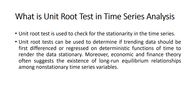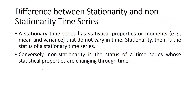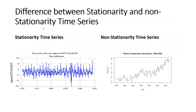Economic and finance theory often suggests the existence of long-run equilibrium relationships among non-stationary time series variables. A stationary time series has statistical properties — for example, mean and variance — that do not vary over time. Stationarity is the status of a stationary time series, while non-stationarity is the status of a time series whose statistical properties are changing through time, meaning we cannot say mean and variance are the same.